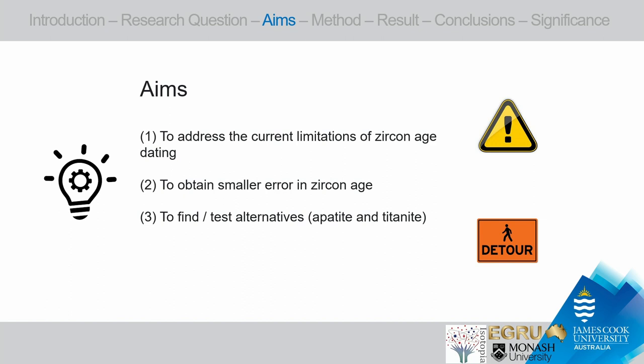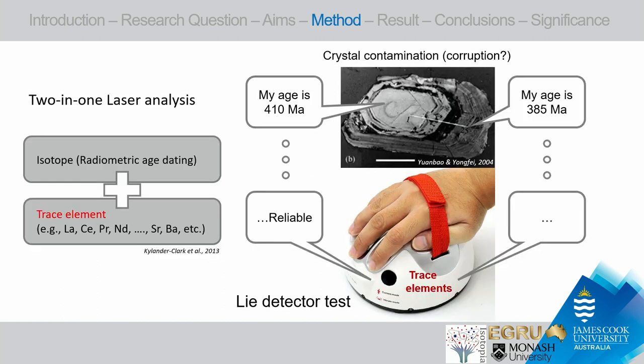The goal is to address the current limitations of zircon age dating — and I have. There are two solutions: first, improve the current technique; second, find another way for dating. So what I'm going to do is use apatite and titanite — different minerals — as alternatives to test their potential. I apply a new method to zircon to improve the technique, then use the same technique on apatite and titanite.